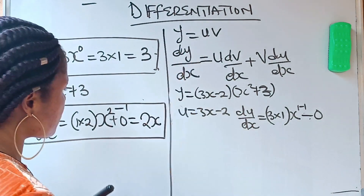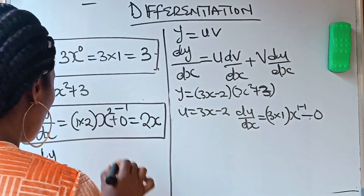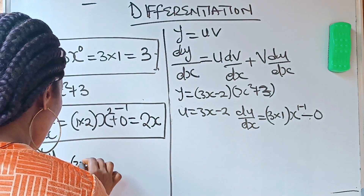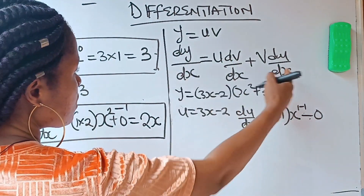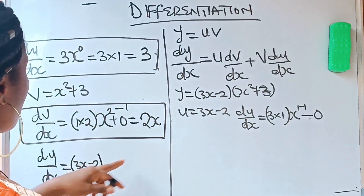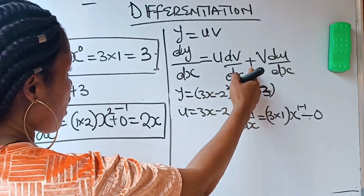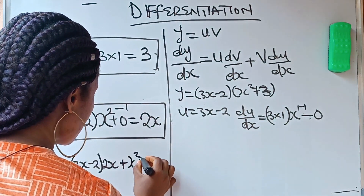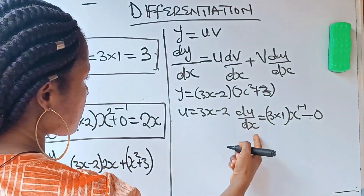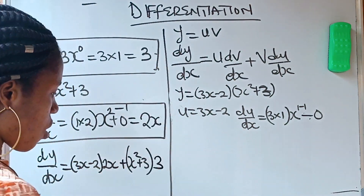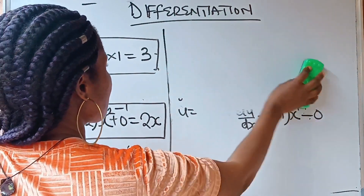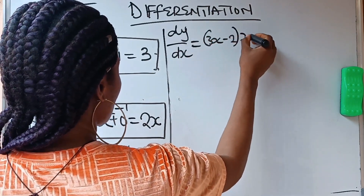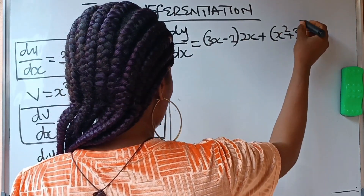We are now going to put everything into the product rule equation. dy/dx is equal to: our u is 3x minus 2, and our dv/dx is 2x, so we write 3x minus 2 times 2x. Plus our v is x squared plus 3, and our du/dx is 3, so we write x squared plus 3 times 3. dy/dx equals 3x minus 2 into 2x, plus x squared plus 3 into 3.